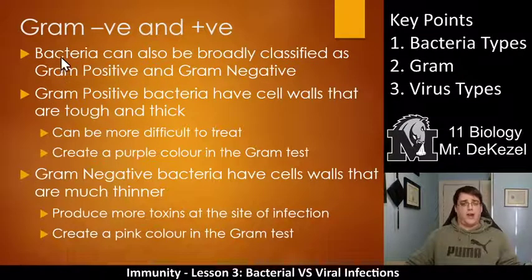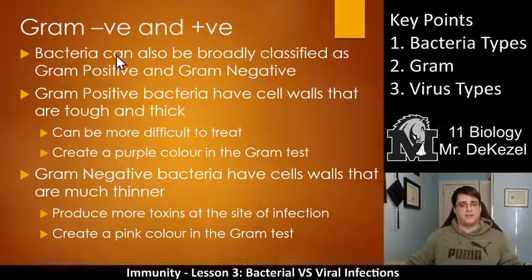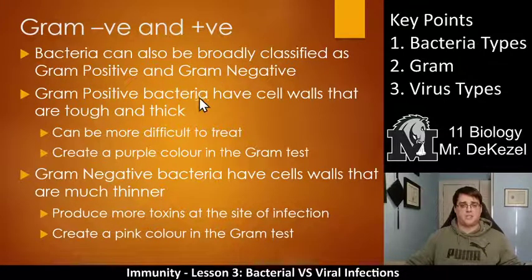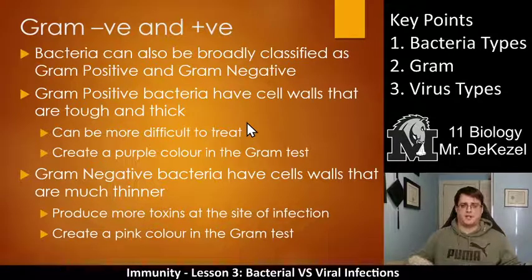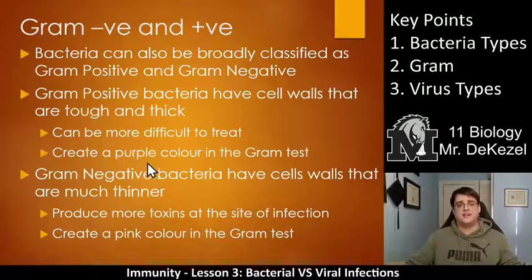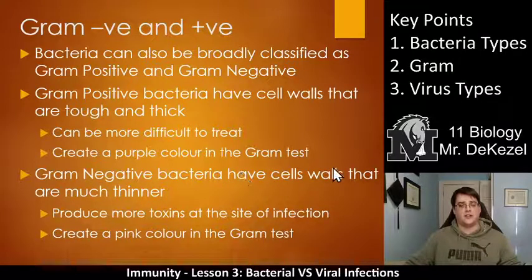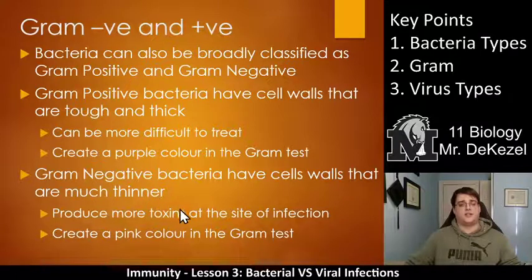Gram positive and gram negative — that's key point two. Bacteria can be broadly classified as gram positive or gram negative. Gram positive bacteria have cell walls that are tough and thick, which means they can be more difficult to treat because they are tougher to break up or tougher for macrophages to engulf. When tested, gram positive bacteria create a purple color in the gram test.